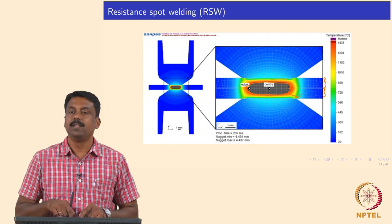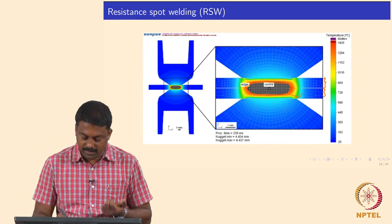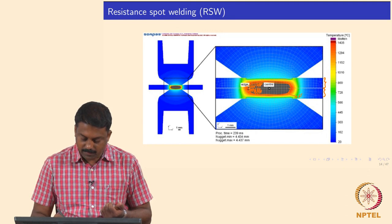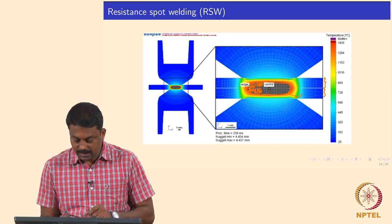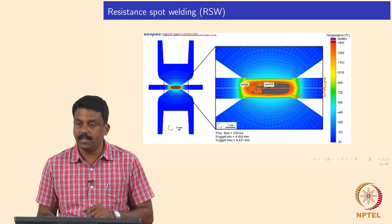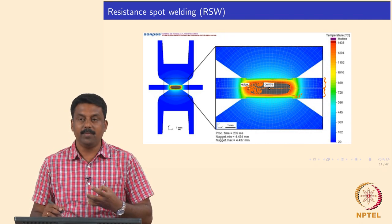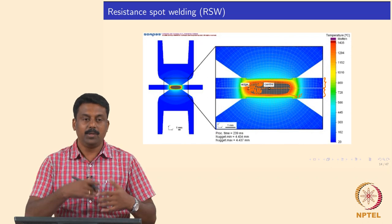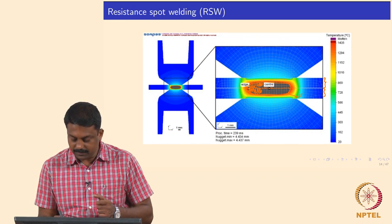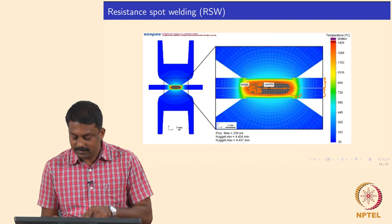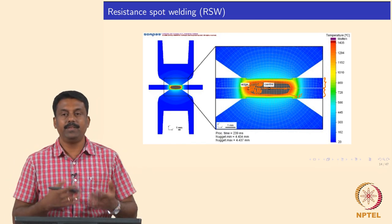If you solidify the nugget, solidification happens in a columnar manner. Grains grow from the fusion boundary, and the liquid that solidifies last is at the middle of the weld centerline — the region of highest temperature, solidifying at the end. Alloying elements partitioning from the solidifying solid into the liquid will all enrich the weld centerline. That is the brittle region in the entire weld nugget because of the enrichment of alloying elements.